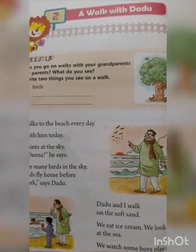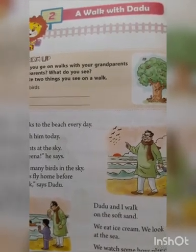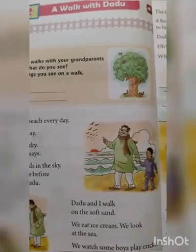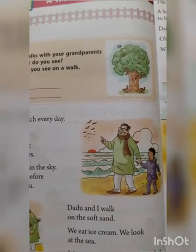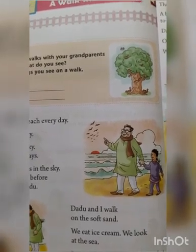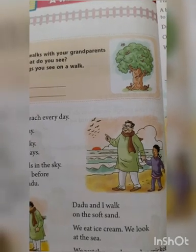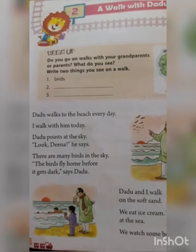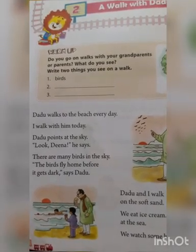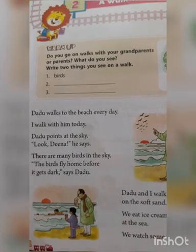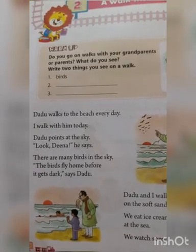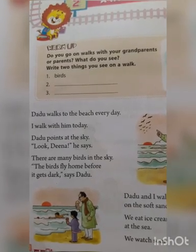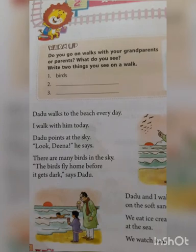Now we will start the chapter: 'A Walk with Dadu.' Here you can see a picture of Dadu and Deena. They went to the beach. Dadu walks to the beach every day — Dadu roj beach pe walk karne jaate hain. I walk with him today — main aaj hi aayi hun.